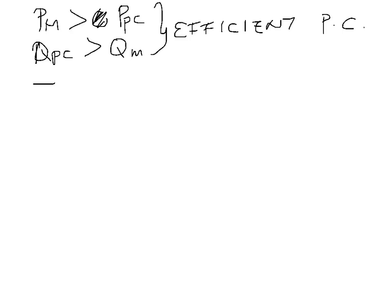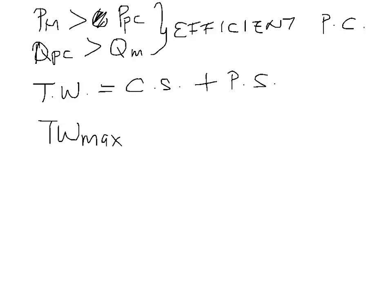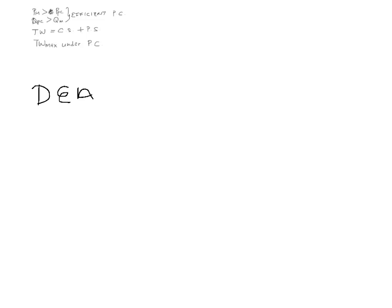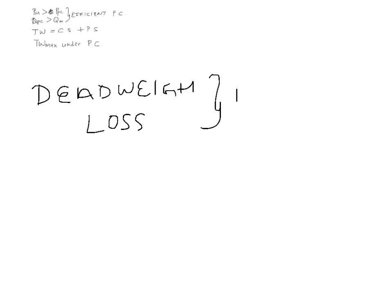This allows us to calculate what we call total welfare, which is equal to consumer surplus plus producer surplus. Total welfare will be maximized under perfect competition. Under monopoly, you will end up with dead weight loss, whereas dead weight loss in perfect competition is equal to zero. Dead weight loss arises from the fall in production, so Q is lower in monopoly than in the competitive market.